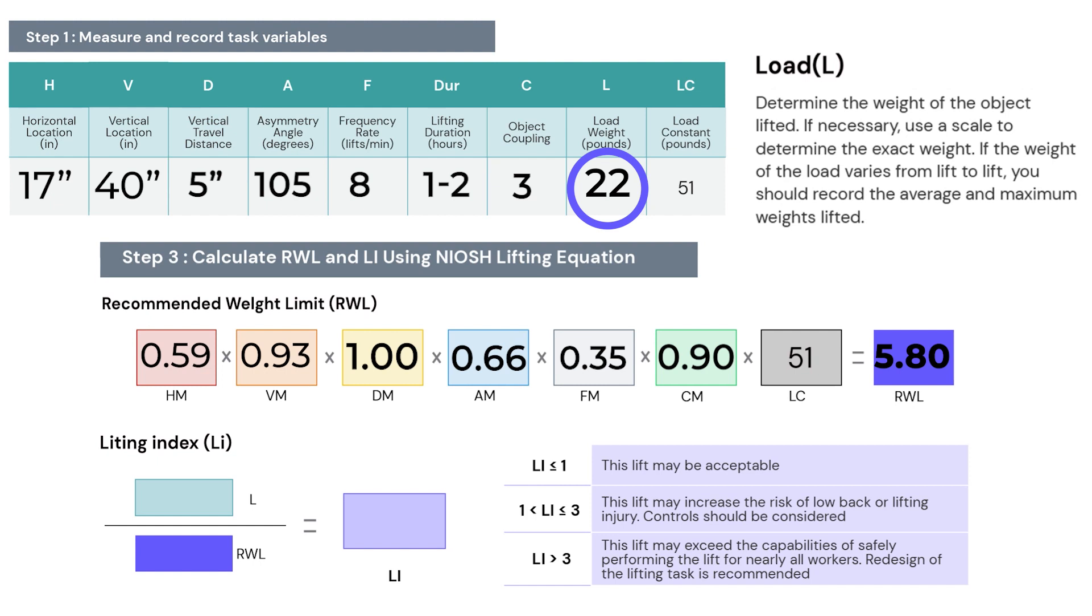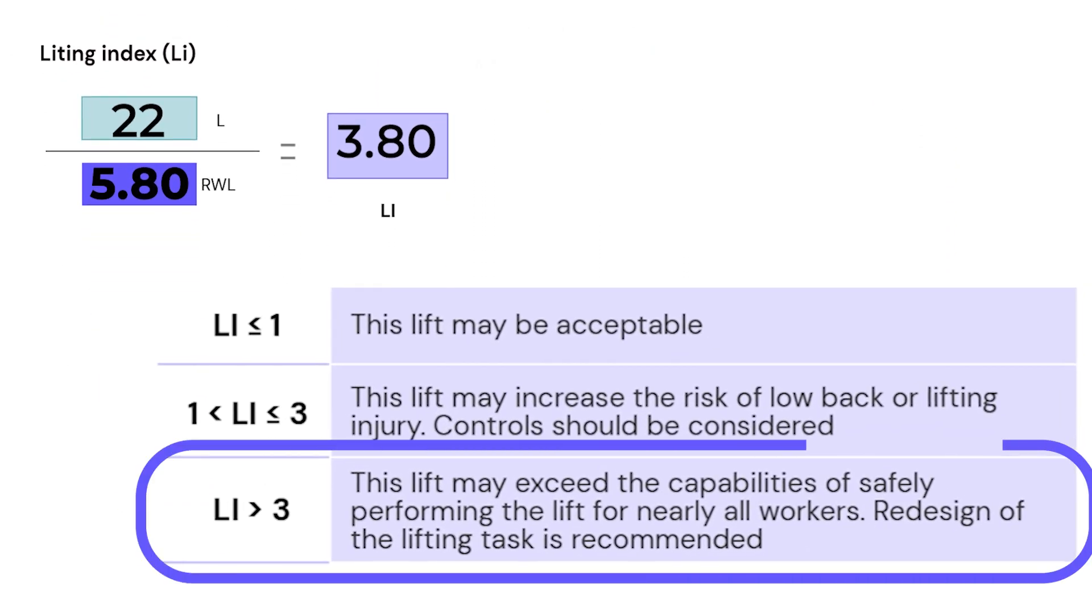This 22 pound value is the numerator on our lifting index equation. The denominator of our calculation is our 5.8 pound recommended weight limit. We divide our 22 pound actual load weight by our recommended 5.8 pound weight limit to arrive at a quotient. In this case, it's 3.8. This is our lifting index. Our lifting index priority scale tells us this lift may exceed the capabilities to safely perform the lift for nearly all workers. So redesign of this lifting task is highly recommended.